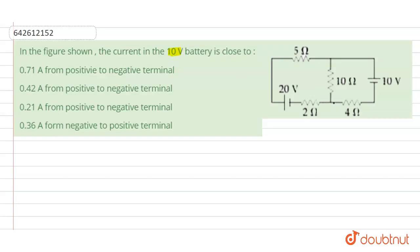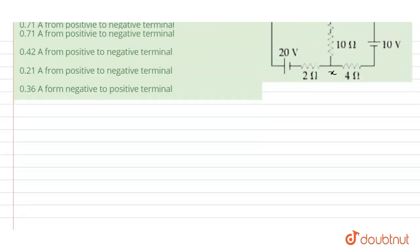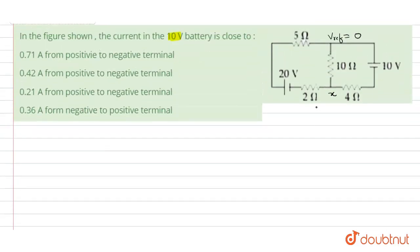First I will consider the potential at this node is x and this is our reference. So this potential will be equals to 0. Now first I will check the value for this resistance. This is connected with the negative terminal. So I can write this value as x plus 20 divided upon net resistance. So 5 plus 2 will be equal to 7.